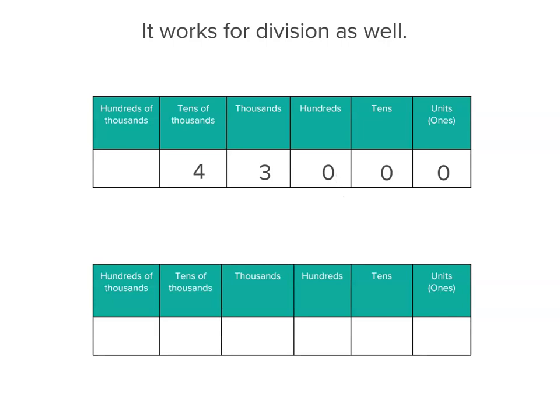Now, it works for division as well. This time we've got 43,000. And remember, if we divide by 10, we move the digits to the right. So 4 is now thousands, 3 is now hundreds, and we've got zeros there. We don't need to worry about that last zero. You'll look at that when we look at decimals.